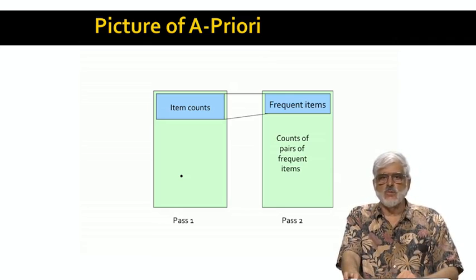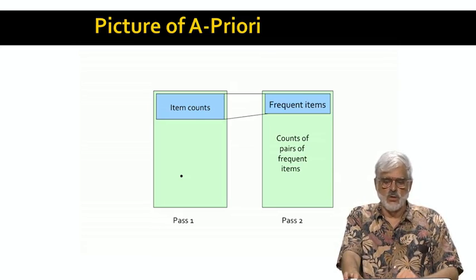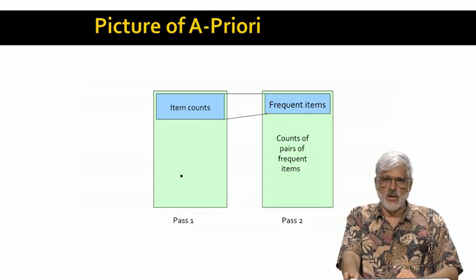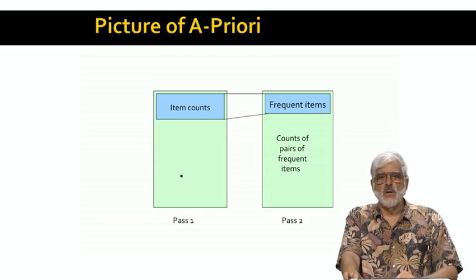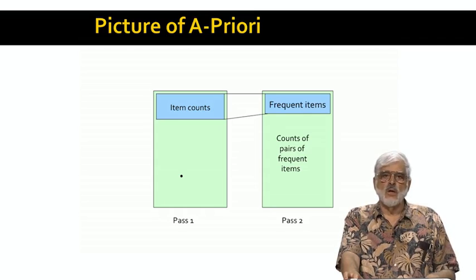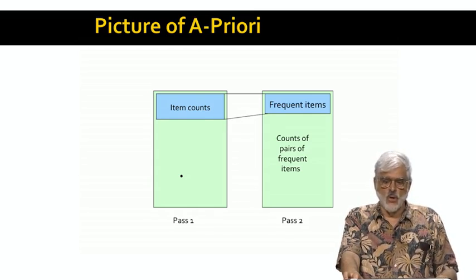In the second pass, we distilled the item counts from the first pass down to a list of frequent items. This list is probably implemented as a hash table or similar structure. So, given an item, we can quickly tell whether it is frequent. The rest of main memory is available for counting all the pairs of frequent items. For A-Priori to work in a reasonable amount of time, these counts must all be able to fit in main memory. If there's still too many counts to maintain in main memory, we need to try something else, a different algorithm, splitting the task among processors, or even buying more memory.